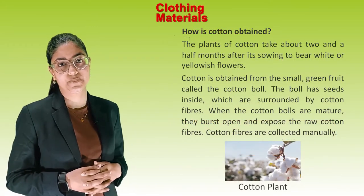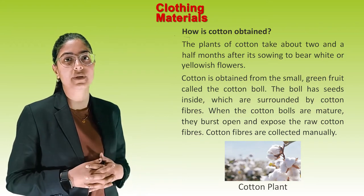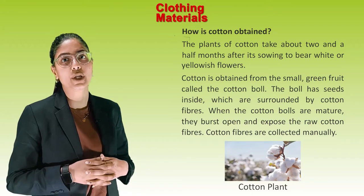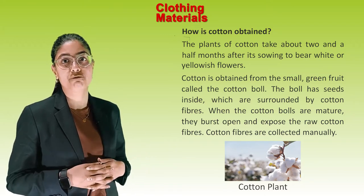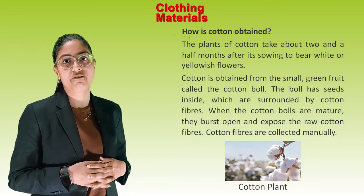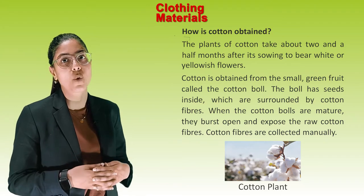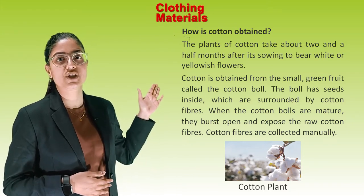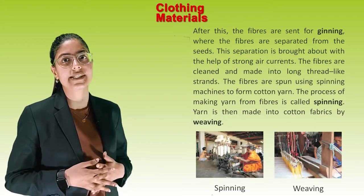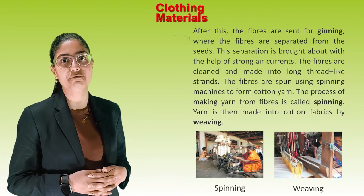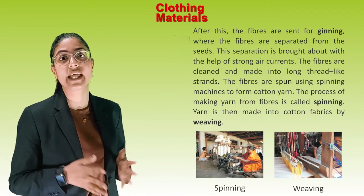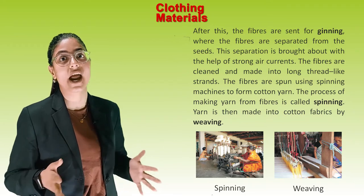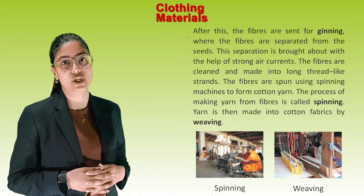How is cotton obtained? The cotton plant takes about two and a half months after sowing to bear white or yellowish flowers. Cotton is obtained from the small green fruit called the cotton boll. The cotton boll has seeds inside which are surrounded by cotton fibres. When cotton bolls are mature, they burst open and expose the raw cotton fibres, which are collected manually. After this, the fibres are sent for ginning, where they are separated from the seeds using strong air currents.